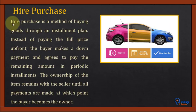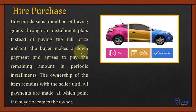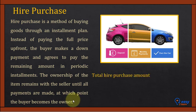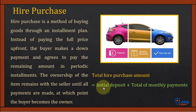Hire purchase is the method of buying goods through an installment plan instead of paying the full price upfront. The buyer makes a down payment and agrees to pay the remaining amount in periodic installments. Ownership of the item remains with the seller until all payments are made, at which point the buyer becomes the owner. The formula is: Total Hire Purchase Amount = Initial Deposit + Total Monthly Payments.